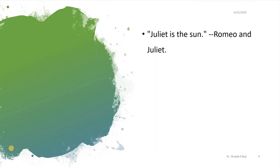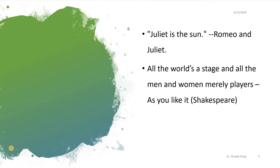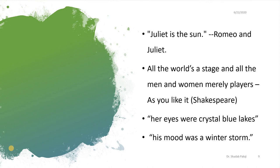Then we come to another figure of speech — another example. 'Juliet is the sun,' from Romeo and Juliet, the famous work of Shakespeare. And another: 'All the world's a stage and all the men and women merely players,' taken from Shakespeare's As You Like It. Now, if you look at all of these, you will find that again there is a comparison — but there is a difference. It is not a direct comparison; one thing is presented as if it is the other thing. Such kinds of statements would be called metaphor.